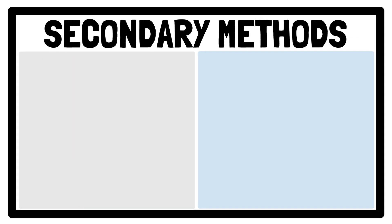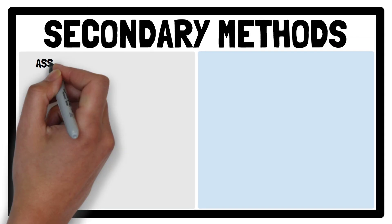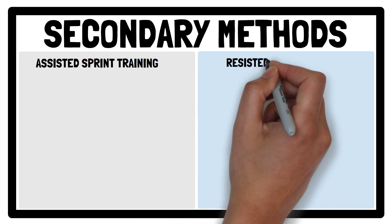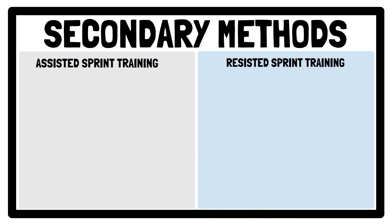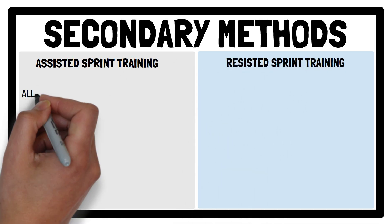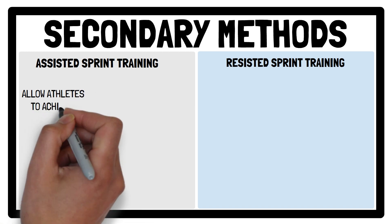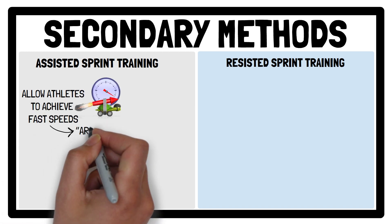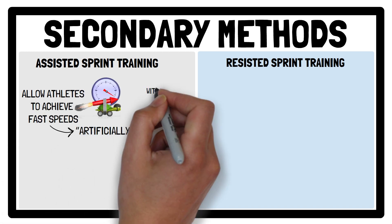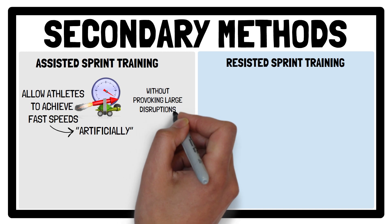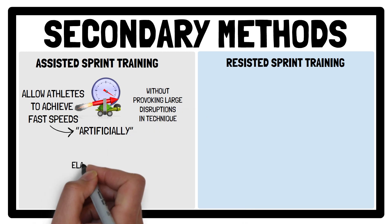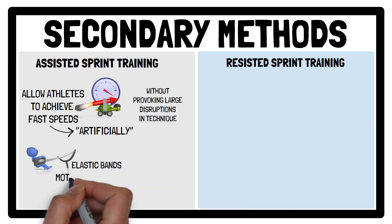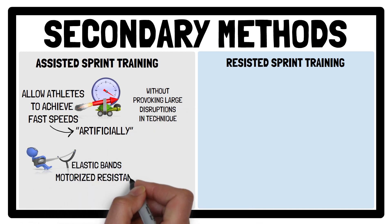Moving on to secondary methods, these simulate the sprinting action and can be divided into assisted and resisted sprint training methods. Means of implementing assisted sprint training, to allow athletes to achieve a fast speed artificially without provoking large disruptions in sprinting technique, include the use of elastic bands, motorised resistance, and downhill running.